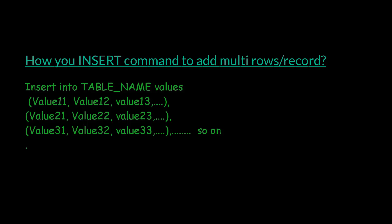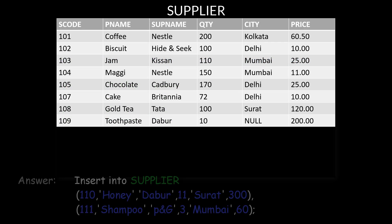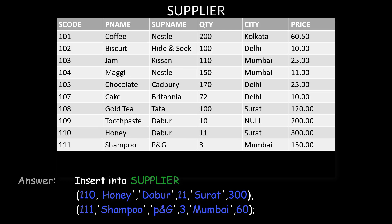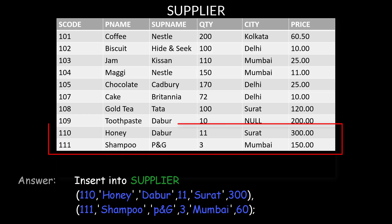Example: INSERT INTO supplier VALUES (first row values), (second row values). Similarly, you can add many rows separated by commas. The table is then updated with all the inserted records.